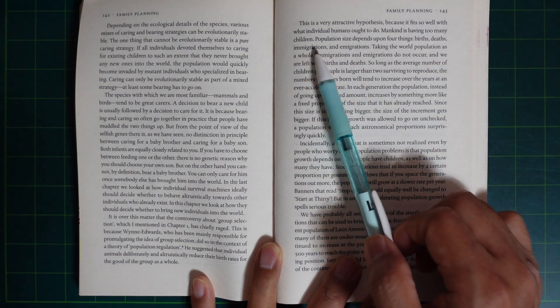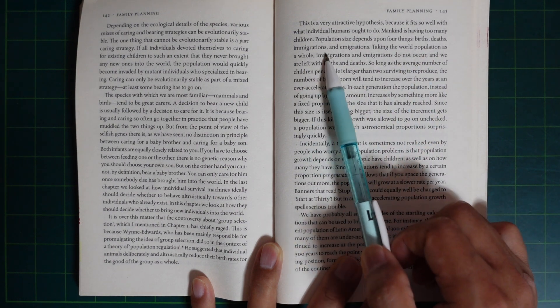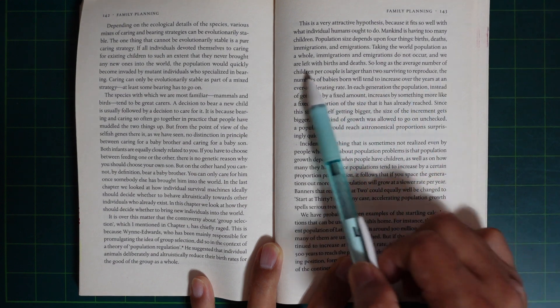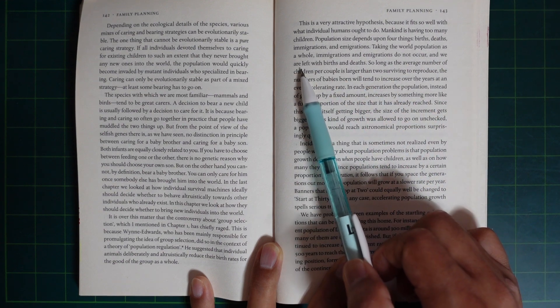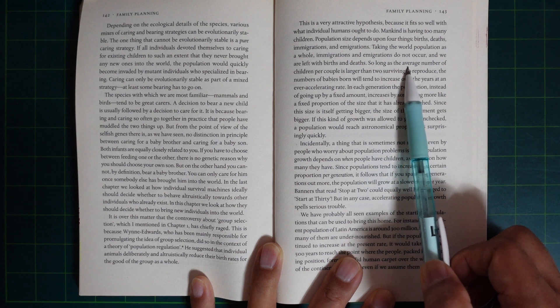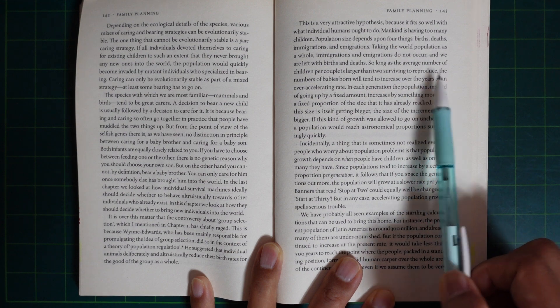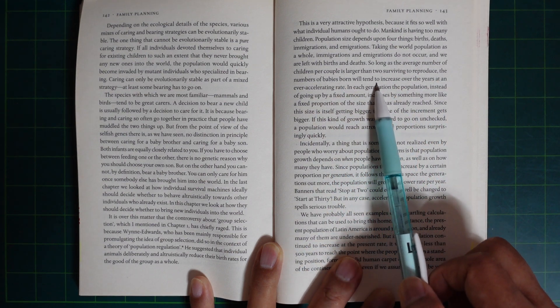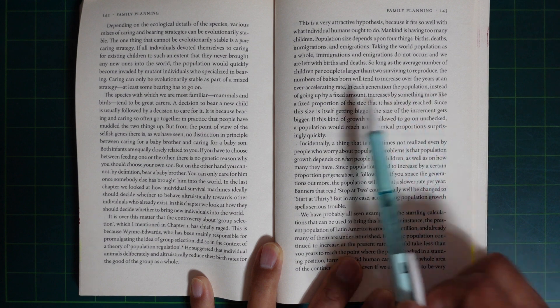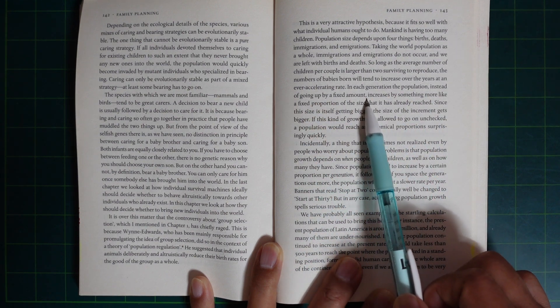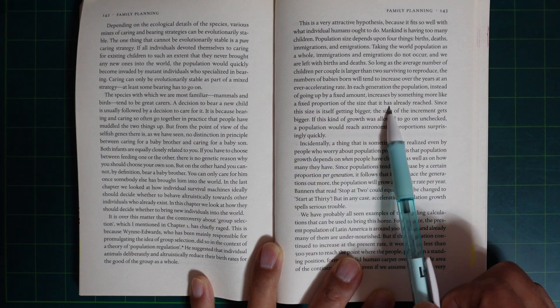He suggested that individual animals deliberately and altruistically reduce their birth rates for the good of the group as a whole. This is a superficially attractive hypothesis because it fits so well with what individual humans ought to do. Mankind is having too many children. Population size depends upon four things. Births, deaths, immigration and emigration. Taking the world population as a whole, immigration and emigration do not occur and we are left with births and deaths. So long as the average number of children per couple is larger than two surviving to reproduce, the number of babies born will tend to increase over the years at an ever-accelerating rate.